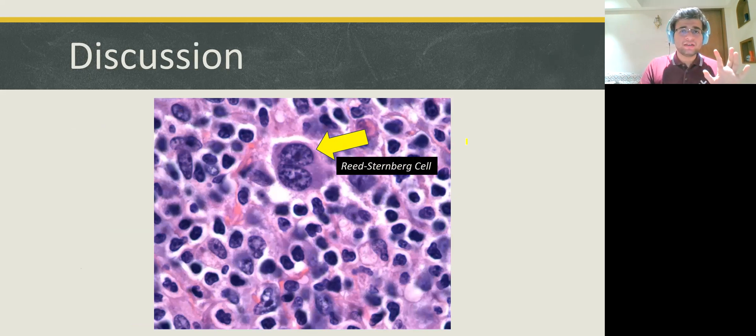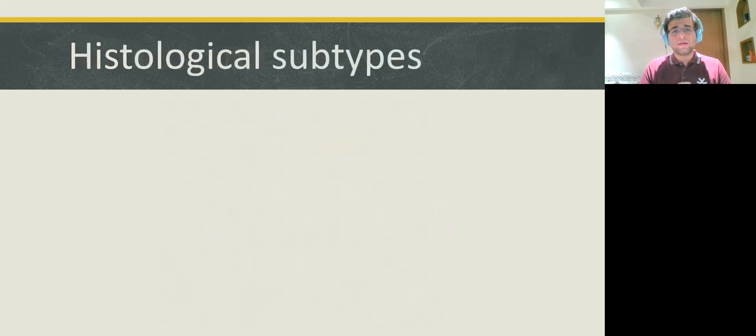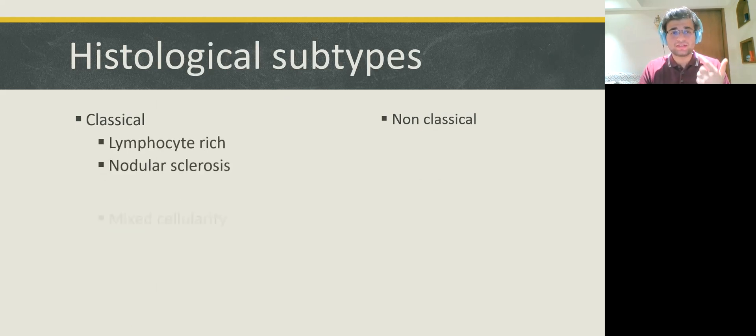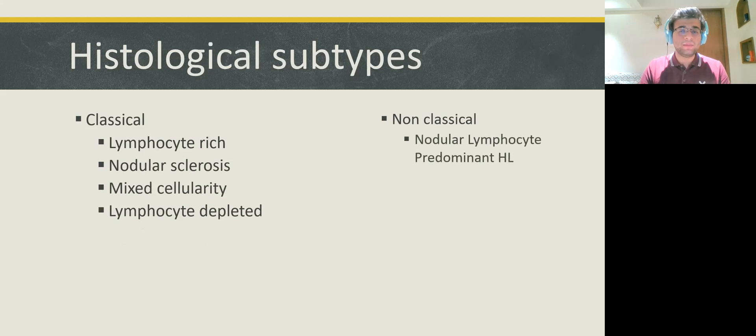Now, let's take a look at the different histological subtypes of Hodgkin's lymphoma. The histological subtypes are of two major types, classical and non-classical. The classical further has the types that are the lymphocyte-rich type, nodular sclerosis type, mixed cellularity type, lymphocyte-depleted type. And in the non-classical, we have a nodular lymphocyte-predominant Hodgkin's lymphoma.